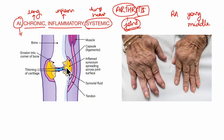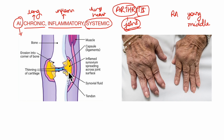Eventually, due to these proliferative and destructive changes, the joints are destroyed, fibrosed, or ankylosed. Fibrosed means fibrous tissue forms around the joints, and ankylosis means there is stiffening or fusion of the joints.